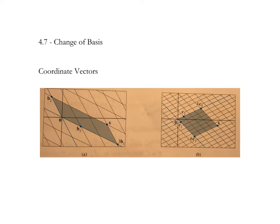Hi everyone. In this next video we're going to cover section 4.7, Change of Basis. In this section we go back to coordinate vectors that we were introduced to previously, I want to say in 4.5. And to visualize what's going on in this section, we'll take a look at a picture.